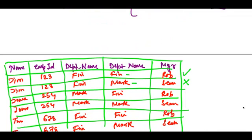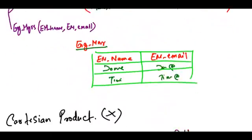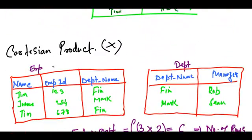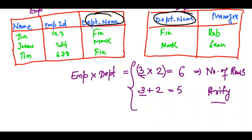What is the common attribute here? We have the department name which is the common attribute between the employee table and the department table. So it's going to relate only those rows which have the same value for the department name attribute.